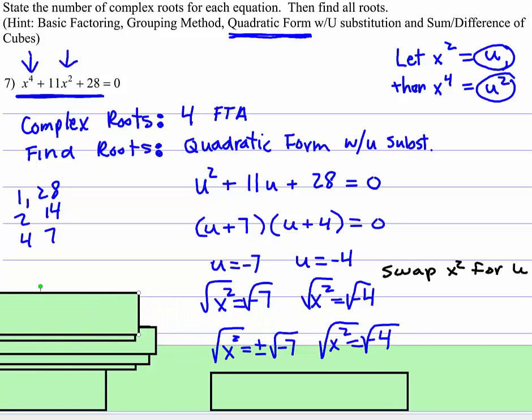So when we take that square root, remember when you take a square root, you end up with a positive and negative version. And remember, negative 7 is the same thing as negative 1 times 7. And remember, the square root of negative 1 is that imaginary i.